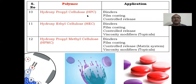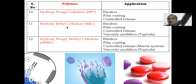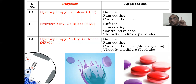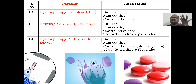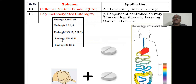HPC (hydroxy propyl cellulose), HEC (hydroxy ethyl cellulose), and HPMC (hydroxy propyl methyl cellulose) are all similar — the propyl, methyl, and ethyl groups change. They are used as binders, for film coating, and for controlled release. With film coating, tablets can be made colorful and elegant — you can enjoy different colors in tablets. They also serve as viscosity modifiers for topicals.